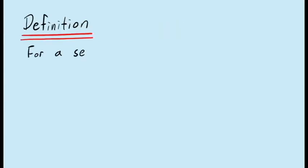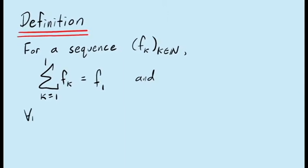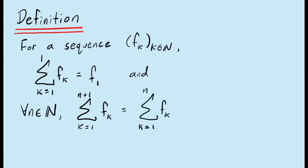We can define this summation notation for adding any number of terms in a sequence as follows. Given a sequence f sub k, where k takes values in the natural numbers, we define the sum as k goes from 1 to 1 to just be the first term in the sequence, f1. From here, we can say that for any n in the natural numbers, the sum as k takes values from 1 to n plus 1 is defined to be the sum as k takes values from 1 to n of the sequence fk, plus the n plus first value in the sequence, f_{n+1}.